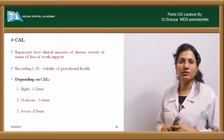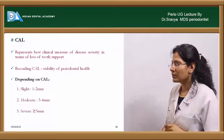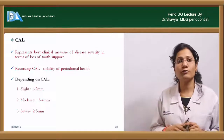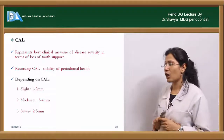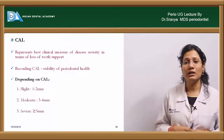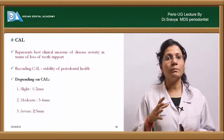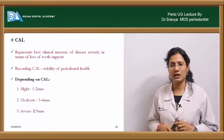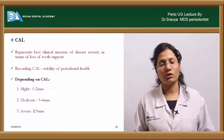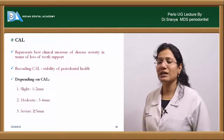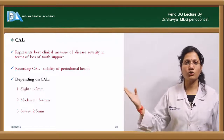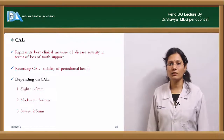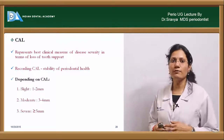What about clinical attachment level (CAL)? It represents the best clinical measure of disease severity in terms of loss of tooth support. Recording clinical attachment level will help you in knowing whether the periodontal status is stable or not. According to the CAL, you can classify chronic periodontitis into slight — 1 to 2 mm of clinical attachment loss — moderate — 3 to 4 mm — and severe — greater than or equal to 5 mm.